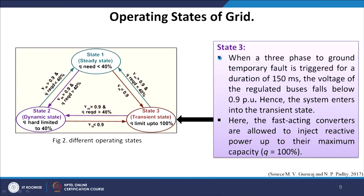The transient state is very important: when a three-phase to ground temporary fault is triggered for a duration of 150 milliseconds, the voltage of the regulated bus falls below 0.9 per unit and the system enters a transient state. Here the fast-acting converters are allowed to inject reactive power up to their maximum capacity — up to 100 percent.